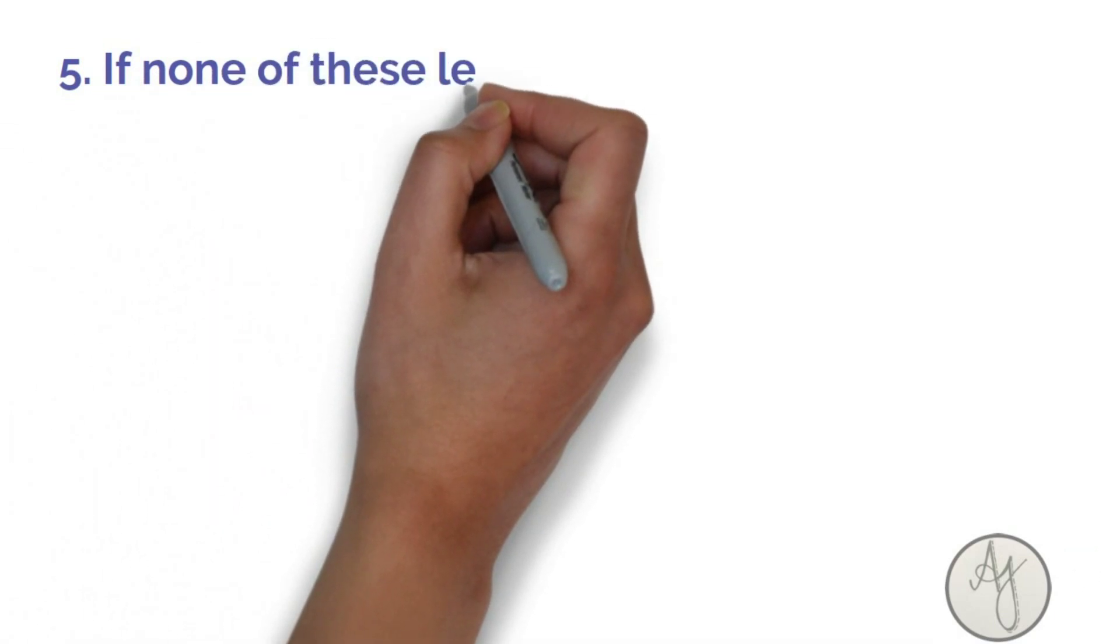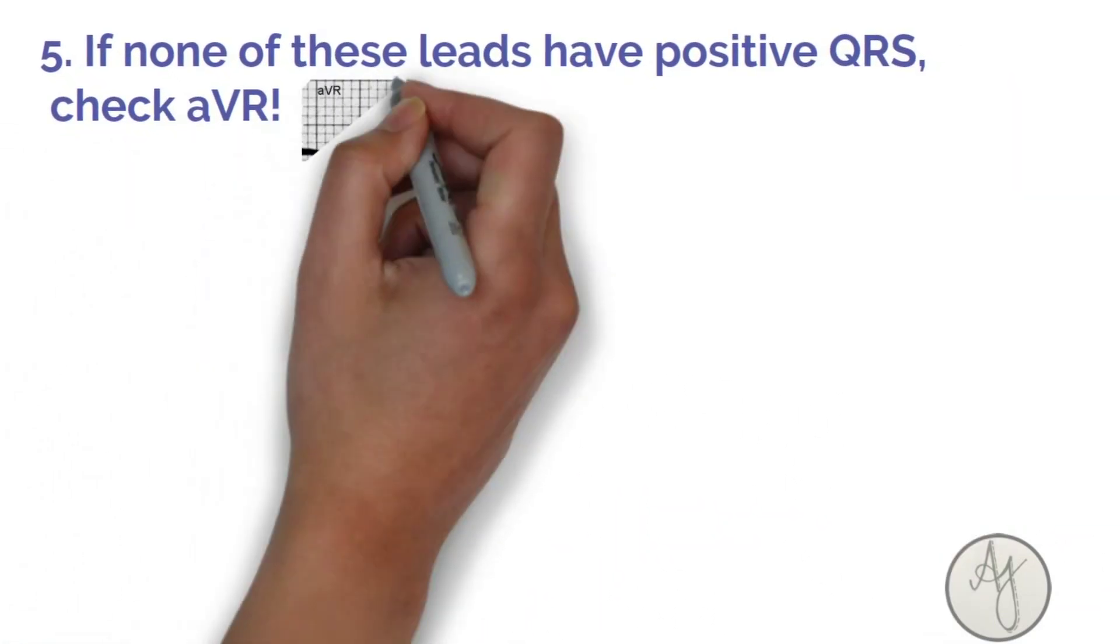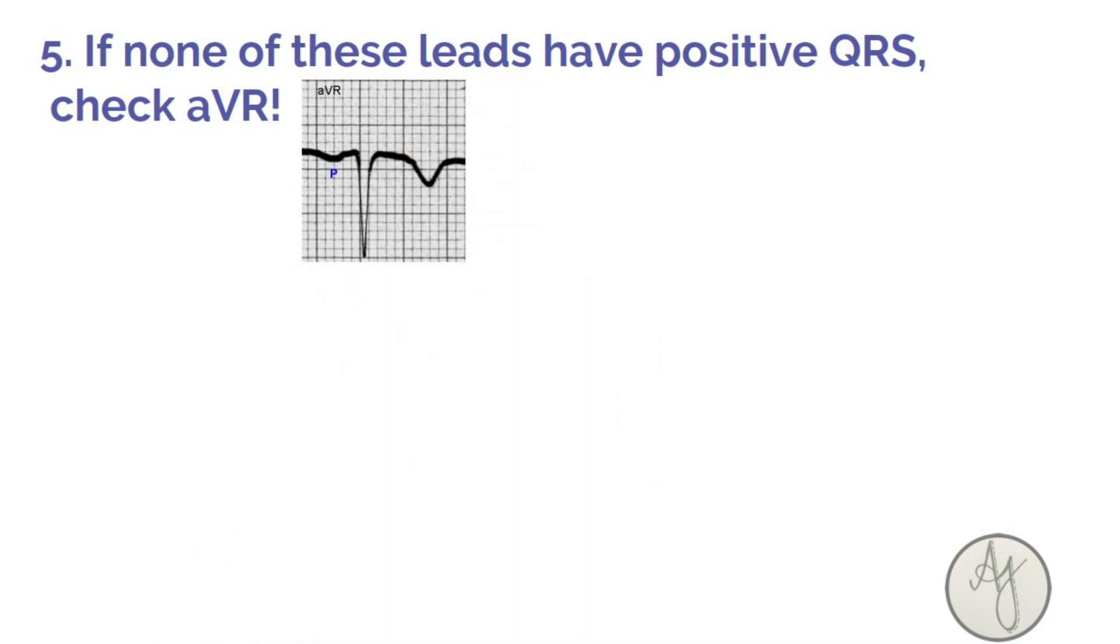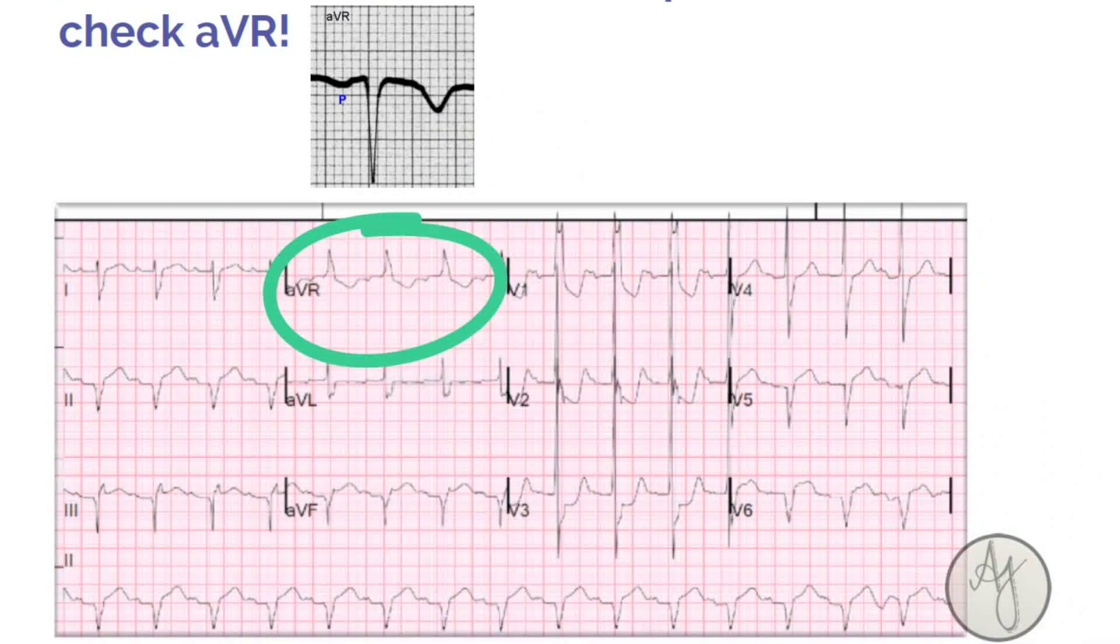So if none of these leads have positive QRS, like all the leads that I've mentioned before, then ultimately you check aVR. Now in aVR, as we all know, all of the complexes, all P, QRS, and T, is supposed to be negative.